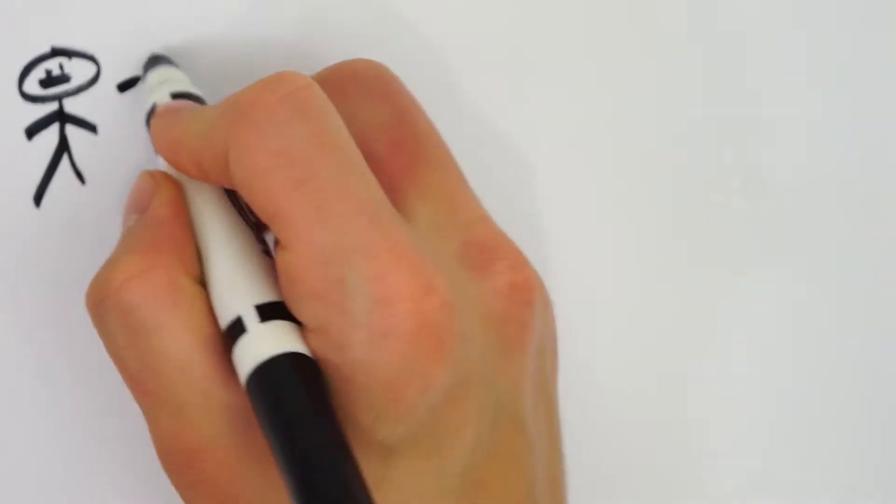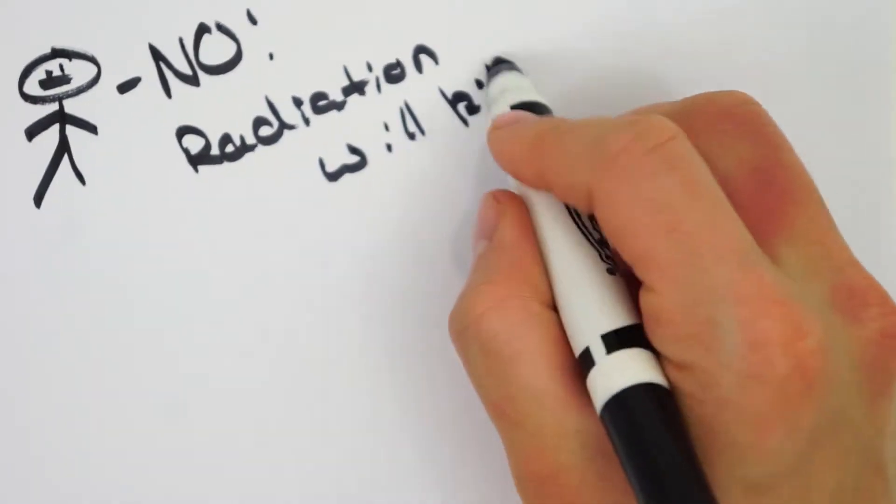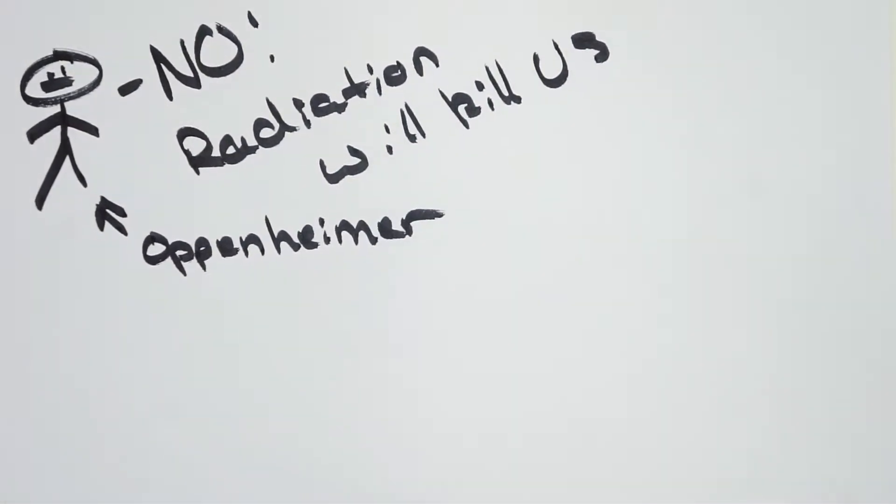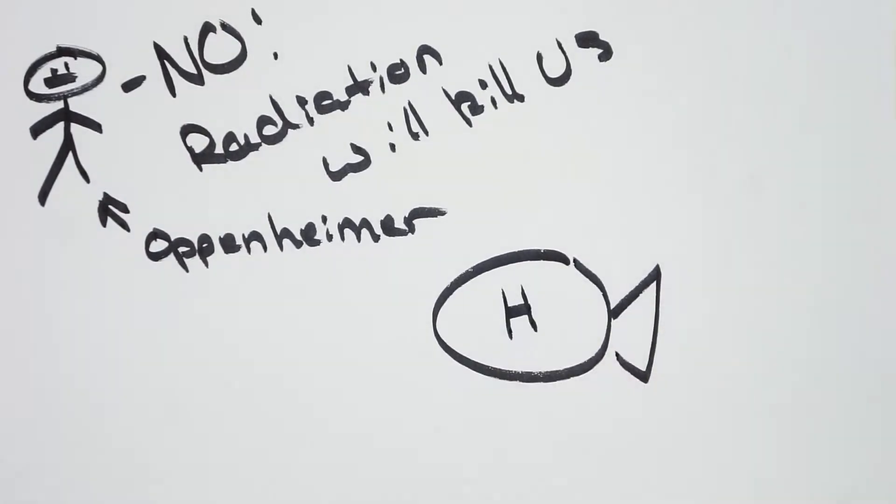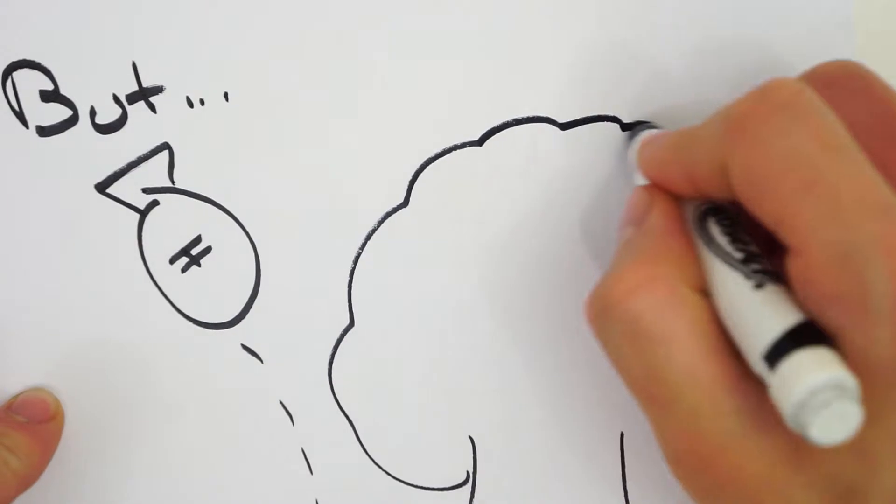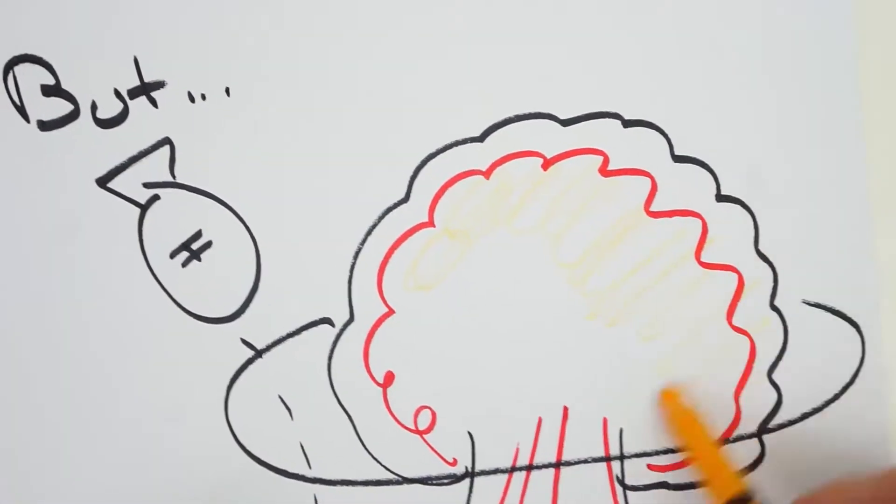This immense power led to fears of radiation from many within the scientific community. None other than the father of the atomic bomb himself, Robert Oppenheimer, led a group that opposed the project. Oppenheimer's efforts proved futile when in 1952, the United States detonated the first ever hydrogen bomb.